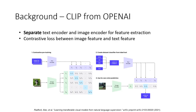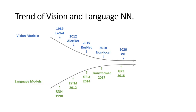Let's first talk about some background. CLIP-like models have been quite popular in the last two years. They have two separate text encoder and image encoder for feature extraction, and then apply a contrastive loss on top between those two features for optimization. In that way, it can learn a strong and transferable visual feature extractor for downstream tasks.